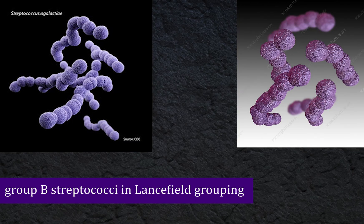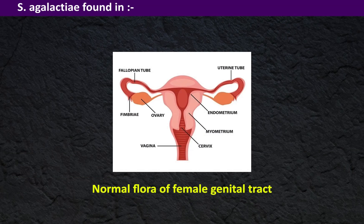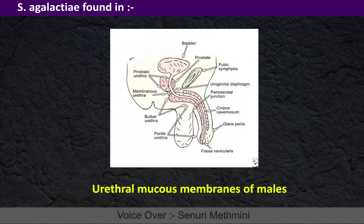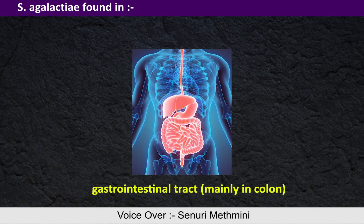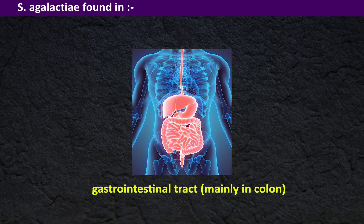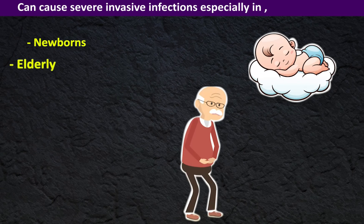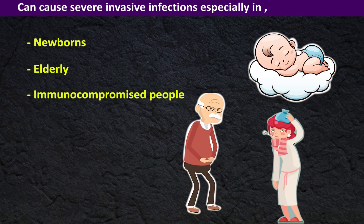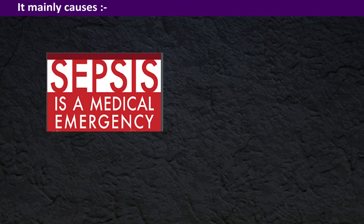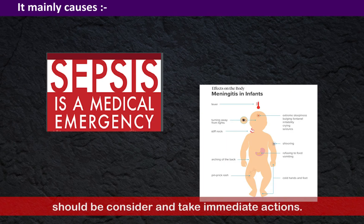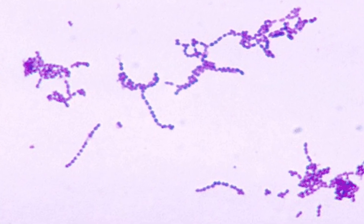S. agalactiae is found in the normal flora of the female genital tract, urethral mucous membranes of males, and in the gastrointestinal tract, mainly in the colon, as asymptomatic carriers. However, it can cause severe invasive infections especially in neonates, elderly, and immunocompromised people. It mainly causes sepsis and meningitis in neonates, which should be considered and acted upon immediately.